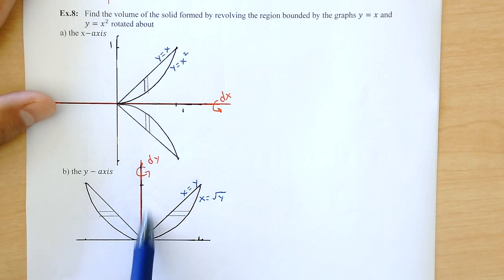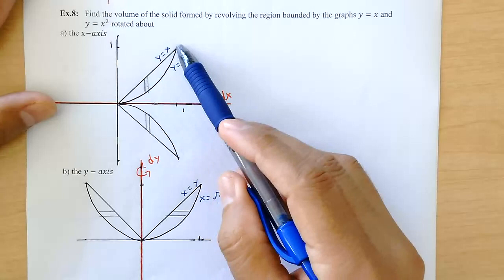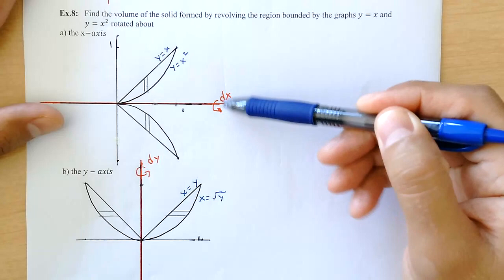I already graphed them. There it is, y equals x, y equals x squared. When I rotate about the x-axis, I need to be in dx.